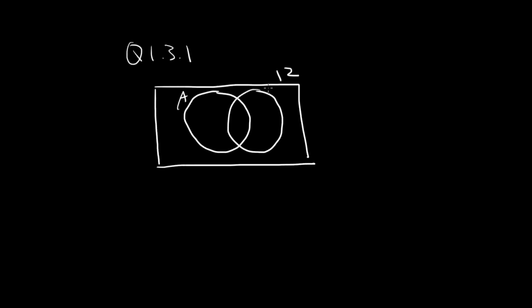Then we have our set A and set B, and always label your set. So again, we want to start from the middle. So here A intersect B, the middle area here is 3.